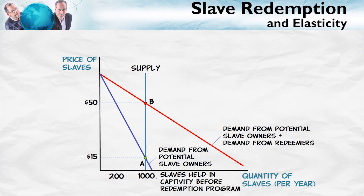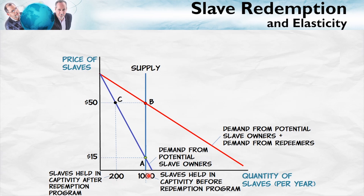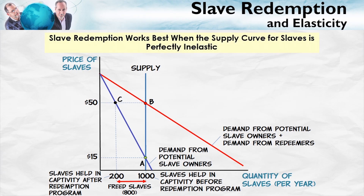The potential slave owners start off at a price of $15 buying 1,000 slaves. At the higher price of $50, the potential slave owners only buy 200 slaves. So 200 slaves end up being held in captivity after the redemption program per year, compared to 1,000 before. The program ends up freeing 800 slaves. In this situation where the supply curve is perfectly inelastic, the program works quite well — every one of those 800 freed slaves would have been a slave had it not been for the redemption program.